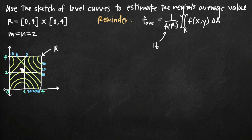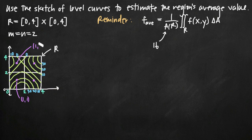Our region is 4 by 4, divided into 2 squares by 2 squares, so we pick the middle of each square. The midpoint of the lower-left square is at (1, 1), the upper-left square is at (1, 3), the upper-right square is at (3, 3), and the lower-right square is at (3, 1). Those are the four points we're going to use.